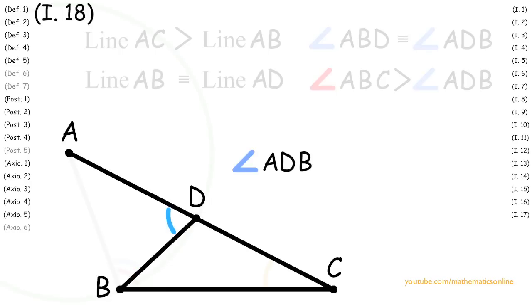Next, we can see that angle ADB is an exterior angle of triangle BCD. So, by Proposition 16, angle ADB is greater than the opposite interior angle BCA.